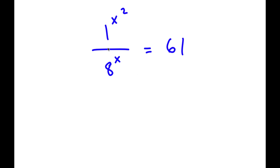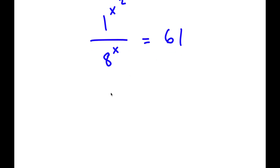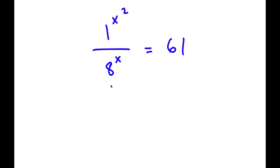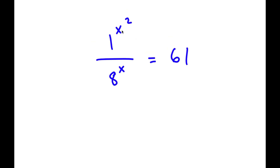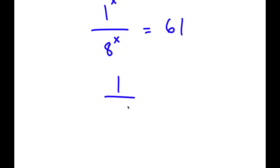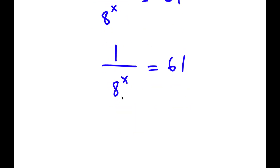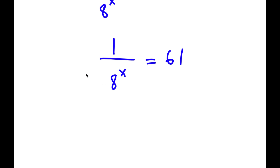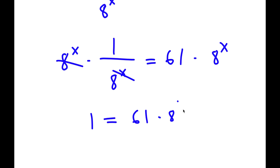In this problem, I have 1 to the power of x² over 8 to the power of x is equal to 61. It's obvious that 1 to the power of any number is simply 1, so whatever x is, 1 to the power of x² equals 1. I can write this as 1 over 8 to the power of x equals 61. Multiplying both sides by 8^x, these cancel out, giving 1 equals 61 times 8 to the power of x.